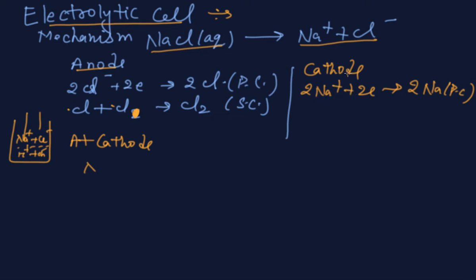And at cathode, cathode will give the electron and coming into the sodium metal, primary change. Now at cathode is that Na+ plus e- gives you Na and its E° value is -2.71 volts. But here, you have to compare in aqueous solution.